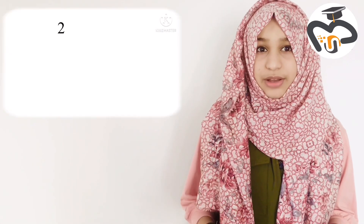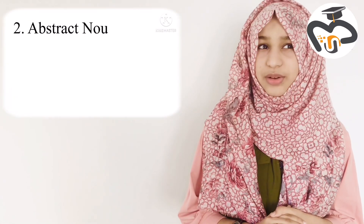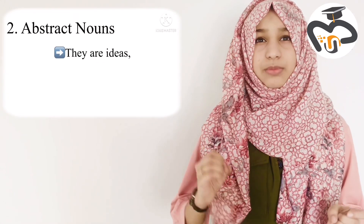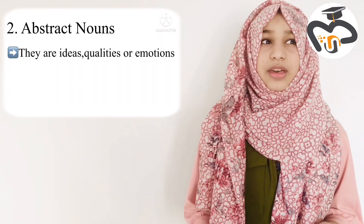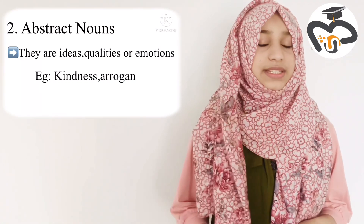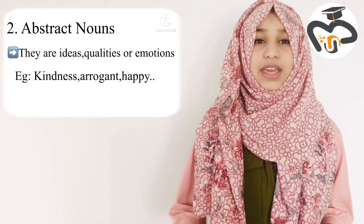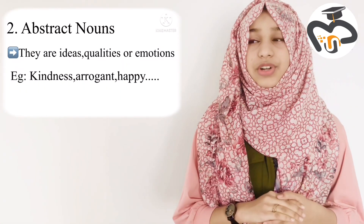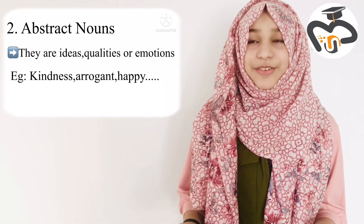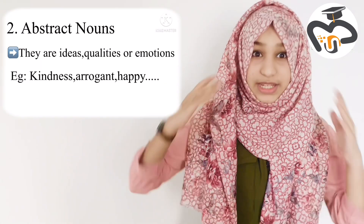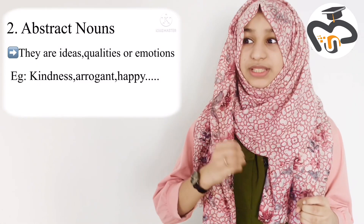The second type is the abstract noun. These nouns are mainly emotions, feelings, or qualities — things that cannot be sensed. For example, it might be kindness, or it might be an idea you get, or the word information. So these are abstract nouns.